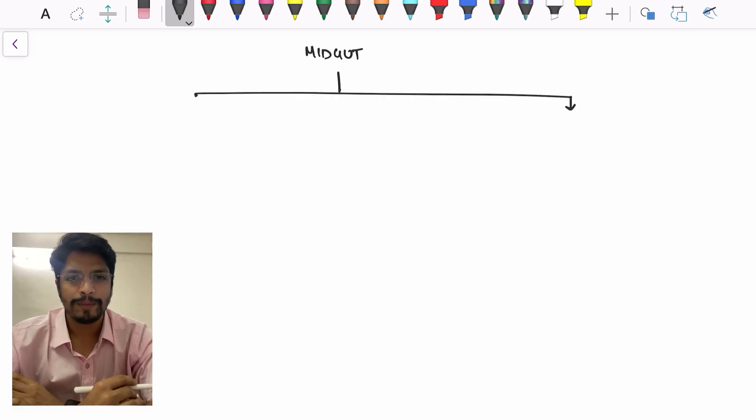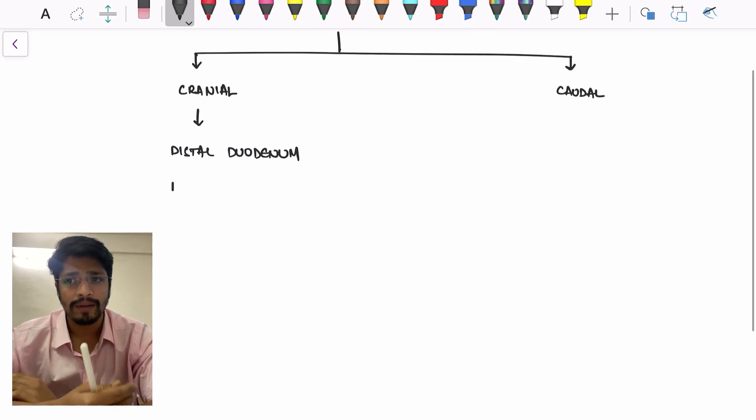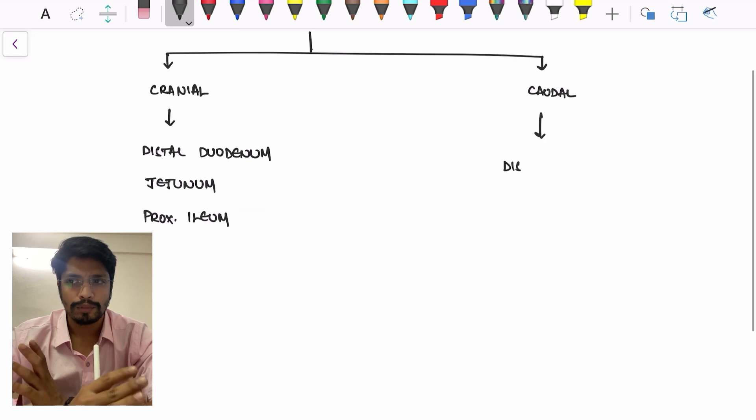We will start with the primitive gut. We already know that primitive gut is divided into foregut, midgut and hindgut. Midgut is divided again cranially and caudally. From the cranial part, we will be having distal duodenum, jejunum and proximal ileum. From the caudal part, we will be getting distal ileum and colon up to the proximal two-thirds.